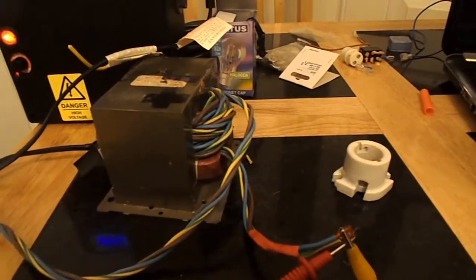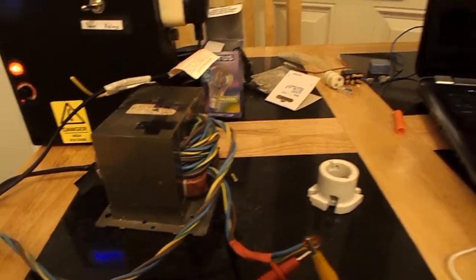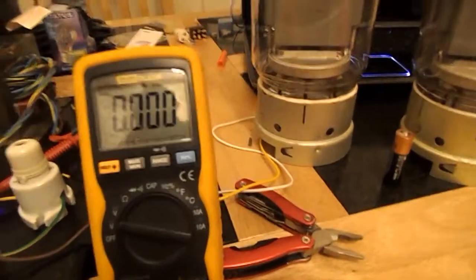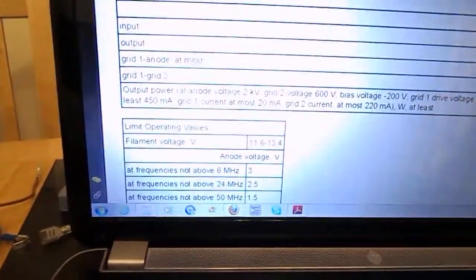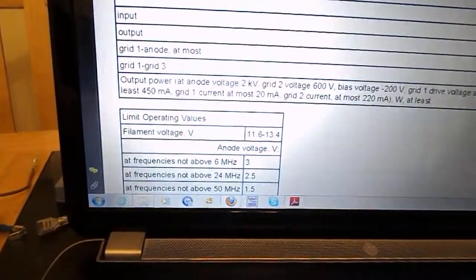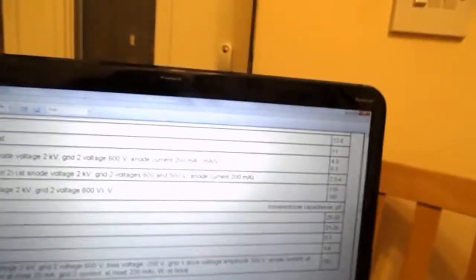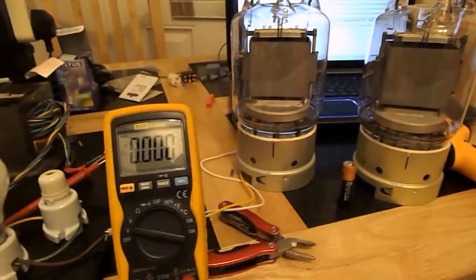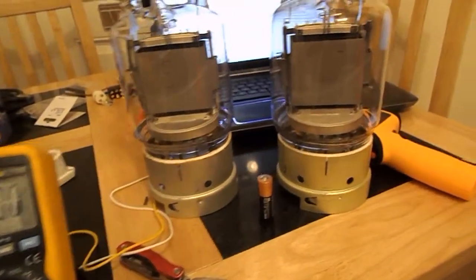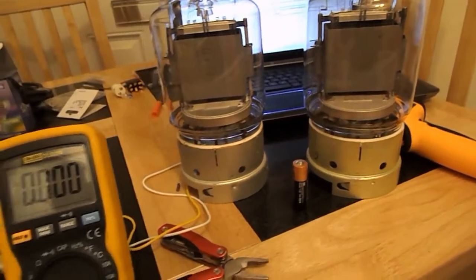Basically what I've got is a rewound MOT to give out about the right amount of volts. Now the datasheet says it needs between 11.6 and 13.4 but optimal is 12.6 volts AC. And it may take about 10 to 11 amps current, which is why I've used an MOT. I do plan on using that one MOT to run both of the tubes.